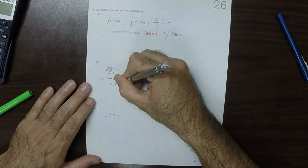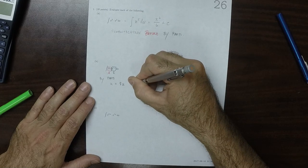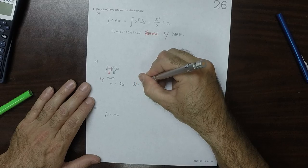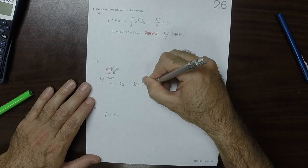So u is 8x, and dv is automatically everything else, e to 7x dx.